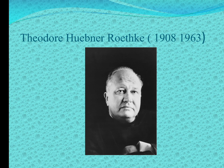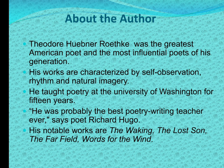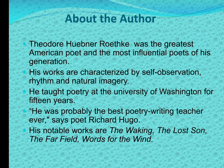He is an American writer. He was born in 1908 and he died in 1963. Theodore Roethke was the greatest American poet and the most influential poet of his generation. His works are characterized by self-observation, rhythm and natural imagery. He taught poetry at the University of Washington for 15 years. He was probably the best poetry writing teacher ever, says poet Richard Hugo. Some of his notable works are The Waking, The Lost Son, The Far Field and Words for the Wind.